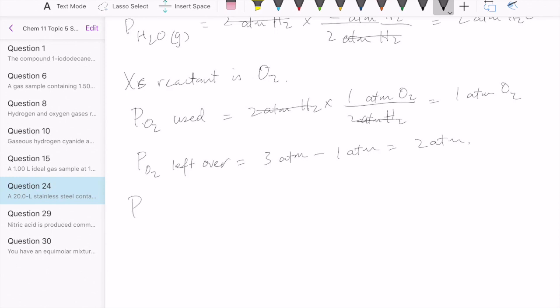So then the answer, which is the pressure final in the tank after reaction, is going to be pressure of H2O gas plus pressure of O2 left over. And that's just going to be two plus two, giving us four ATM. Thank you.